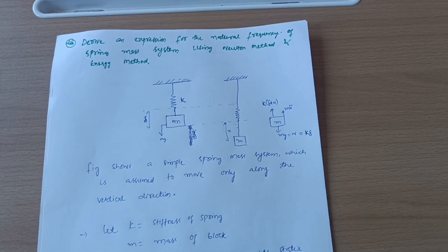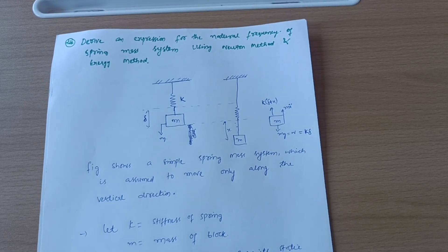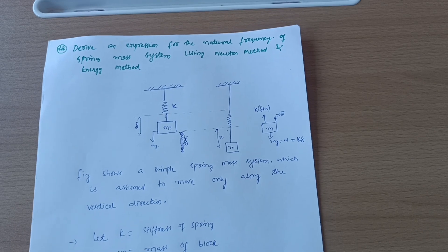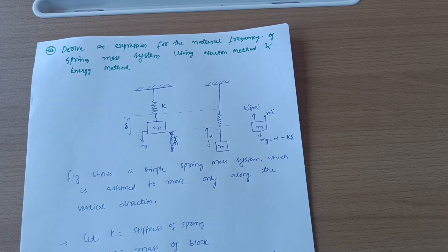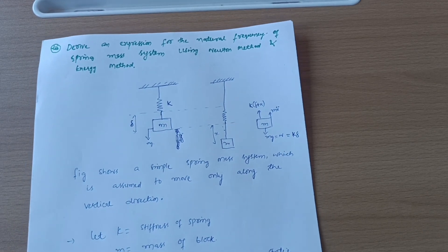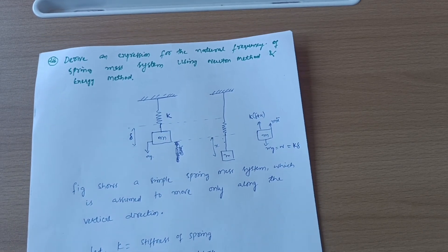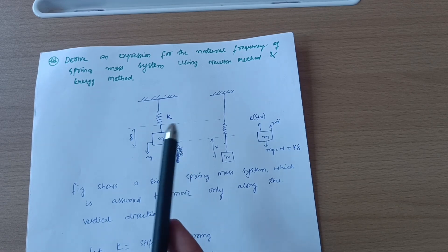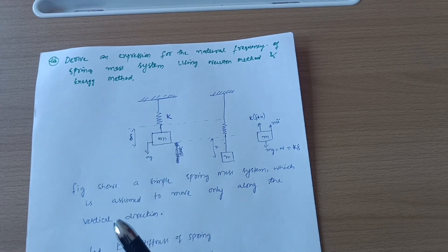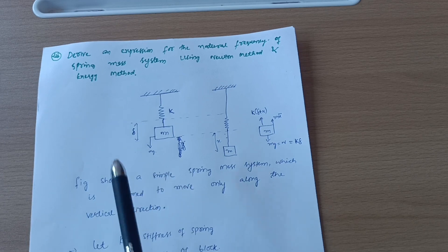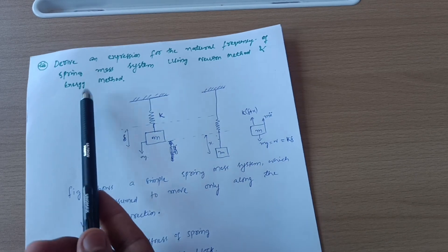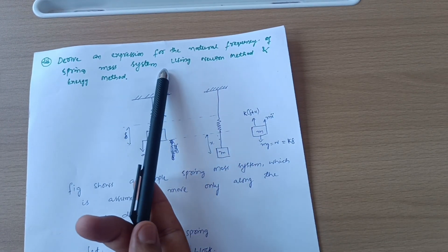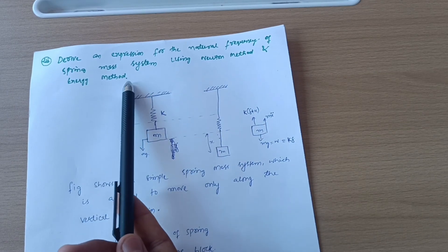Dear mechanical engineering students, welcome back to my channel. If you have the backlog of the subject Theory of Machines, this is a model for a super important derivation. Some numericals are based around this particular derivation, which I will solve in this one-shot video. Let's start without wasting time: derive an expression for the natural frequency of a spring-mass system using Newton's method and energy method.